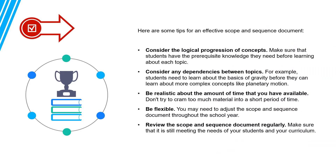Here are some tips for an effective scope and sequence document. Consider the logical progression of concepts and make sure that students have the prerequisite knowledge they need before learning each topic. Consider any dependencies between topics — for example, students need to learn about the basics of gravity before they can learn about more complex concepts like planetary motion. Be realistic about the amount of time available, don't try to cram too much material into a short period, and be flexible, as you may need to adjust the scope and sequence document throughout the school year. Review it regularly to make sure it is still meeting the needs of your students and curriculum.